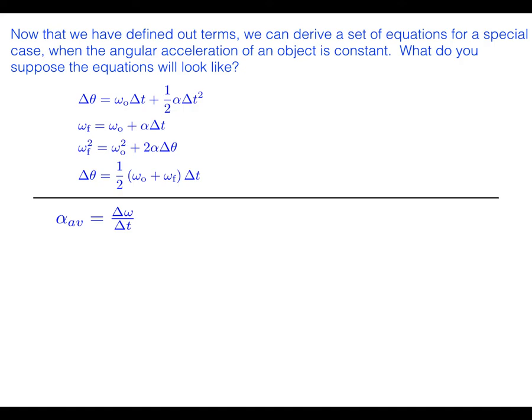So we can start with average acceleration is change in omega over change in time and rearrange that equation. Well, not rearrange it and note that if the acceleration is constant, then the average acceleration is equal to the instantaneous acceleration is equal to the acceleration. So we'll just call it alpha and rearrange that a little bit. And what you find is that omega final is equal to omega initial plus alpha times delta T. Really the substitution that's being made there is that change in omega is omega final minus omega initial. And then you rearrange the equation and you can get this one.